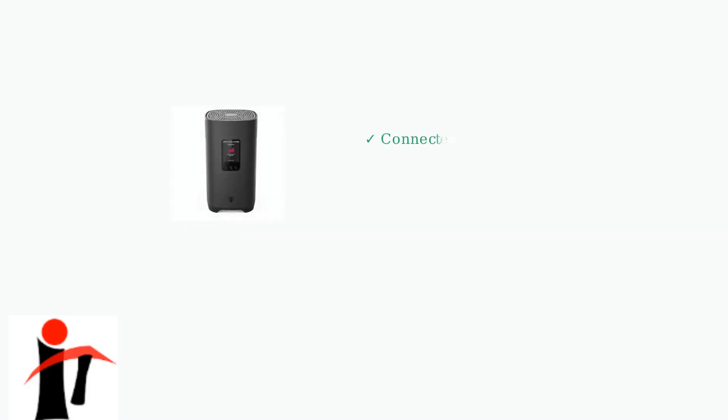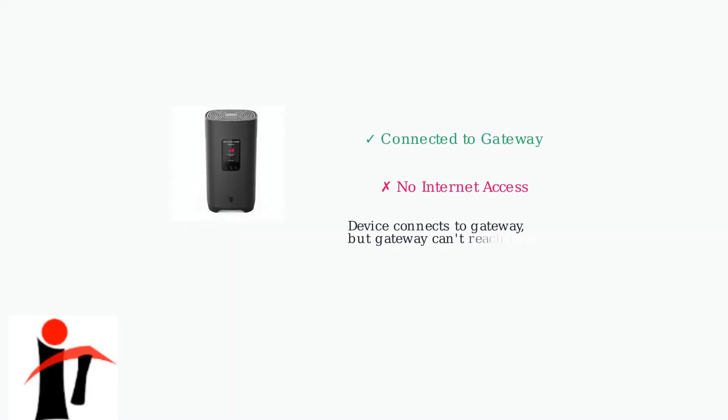When your T-Mobile home internet shows connected but no internet, it means your device is successfully connected to the T-Mobile gateway, but the gateway itself cannot reach the internet. This frustrating situation affects millions of T-Mobile customers and has several distinct causes.